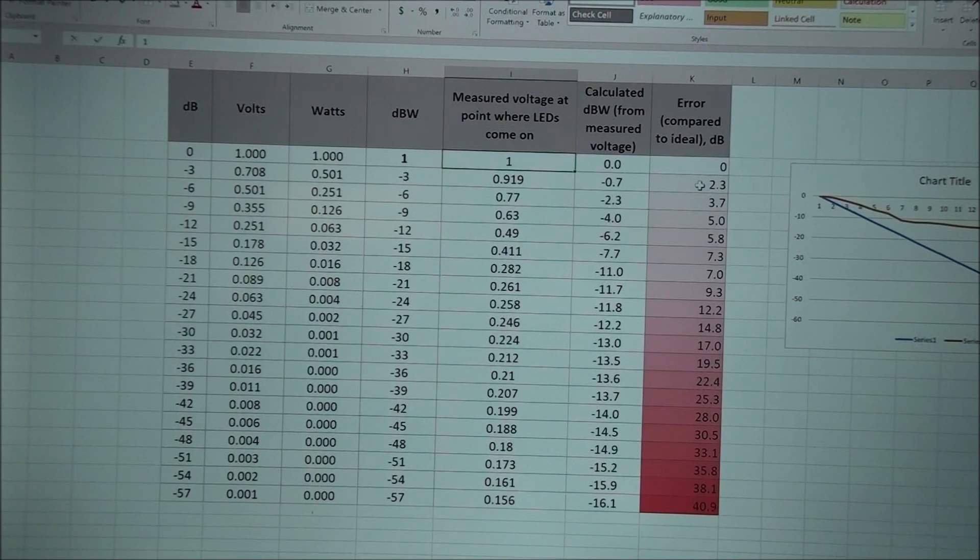Then if you follow this down and look at this error it gets worse and worse, and it gets extremely bad. I mean 10 or 12 dB that's pretty bad, that's way off. But if you go down more you get up to almost 41 dB off. In other words, the display says minus 57, that's what's silk screened right on the unit, but that light actually lights up at minus 16.1, so that's 40 dB higher than what that light is.